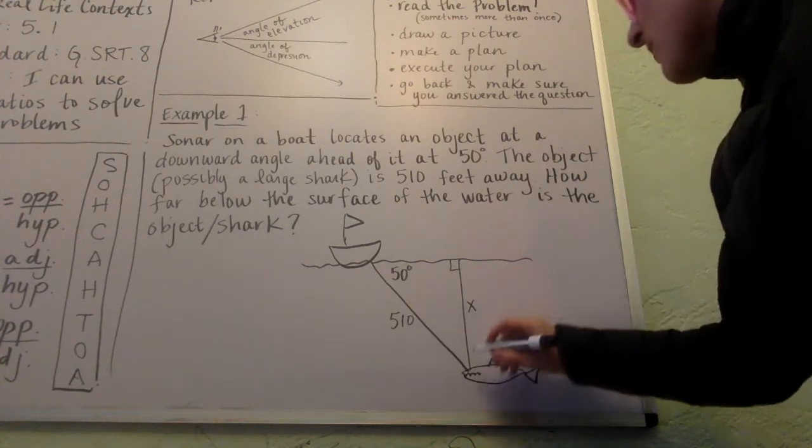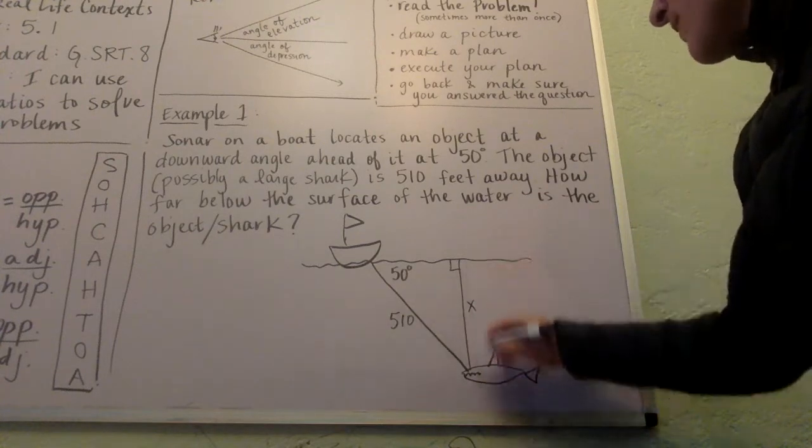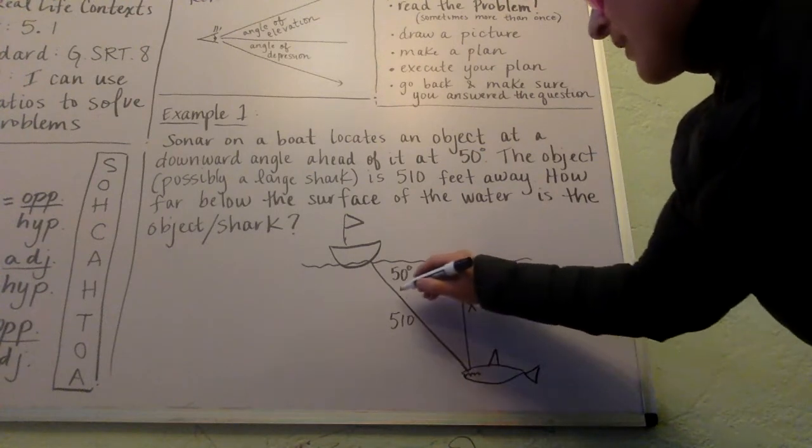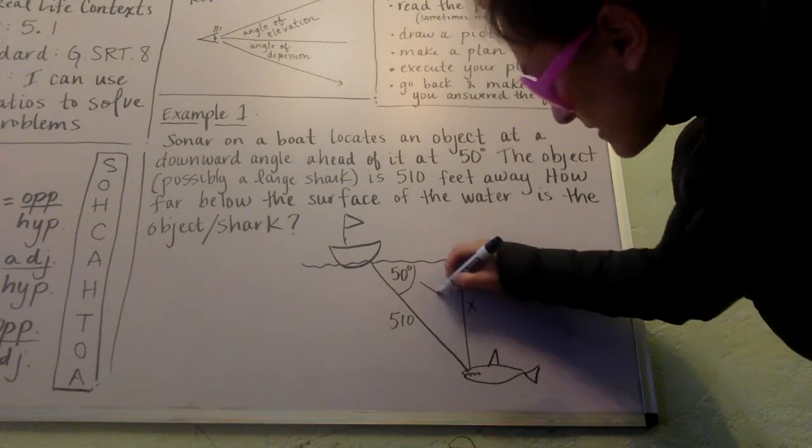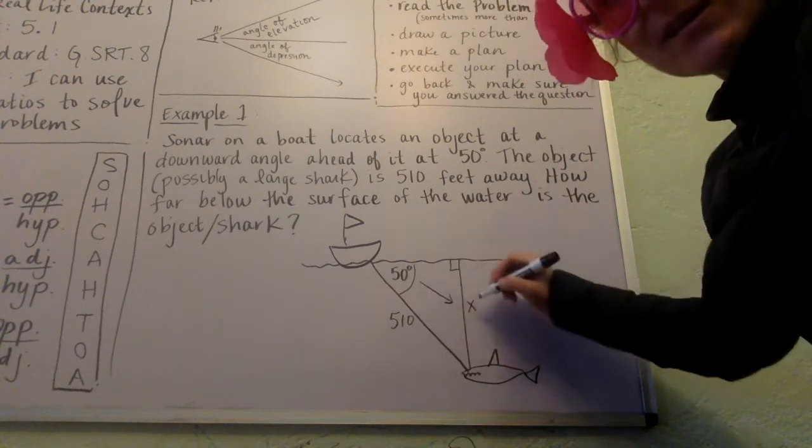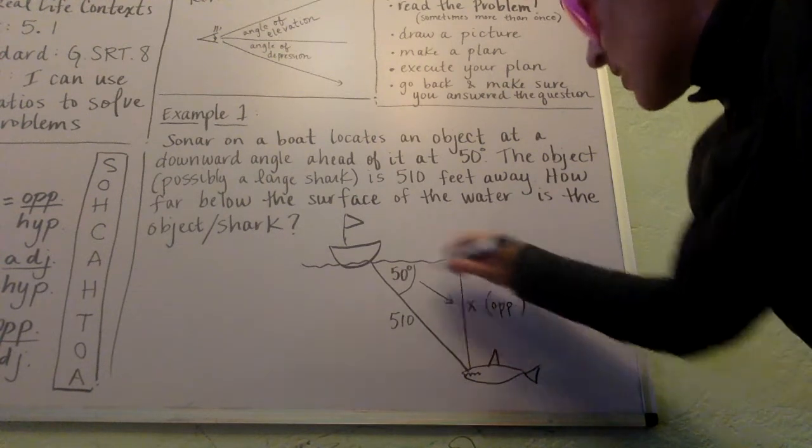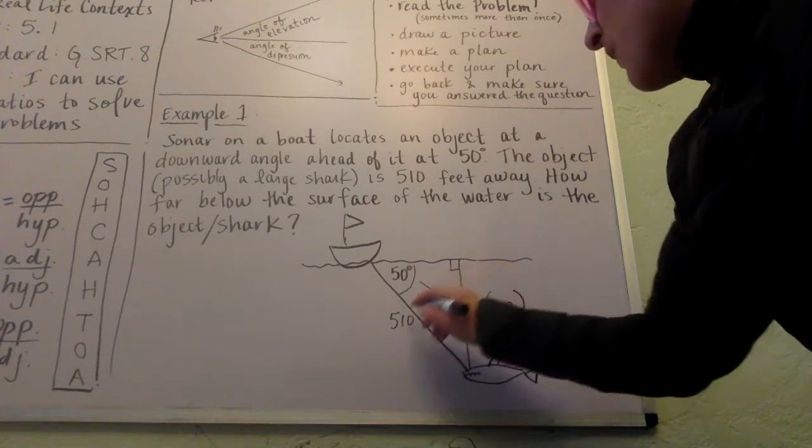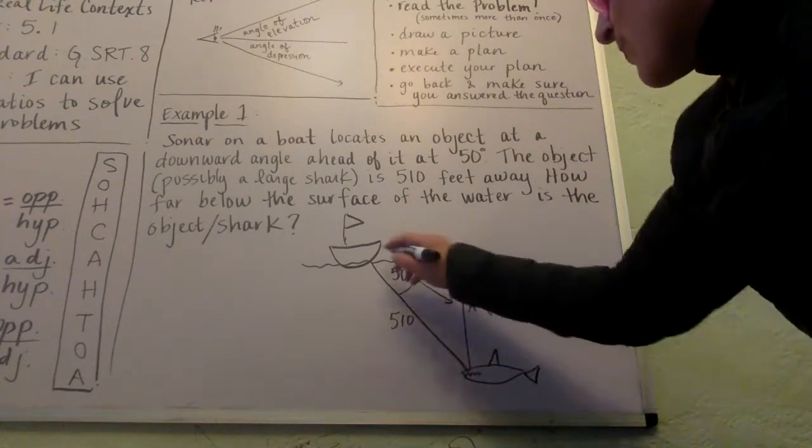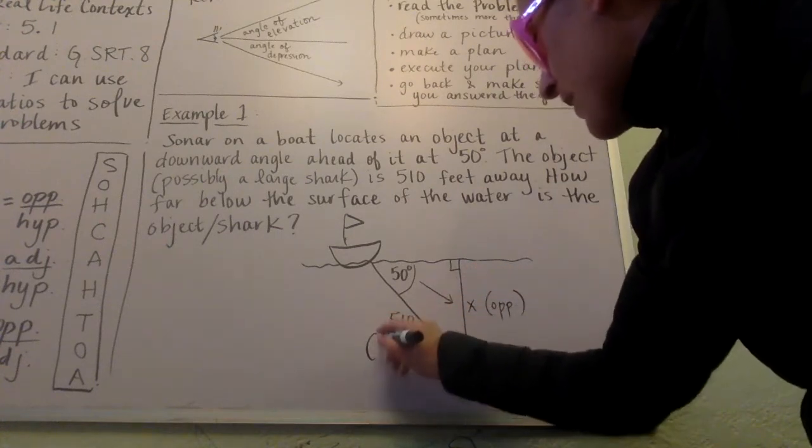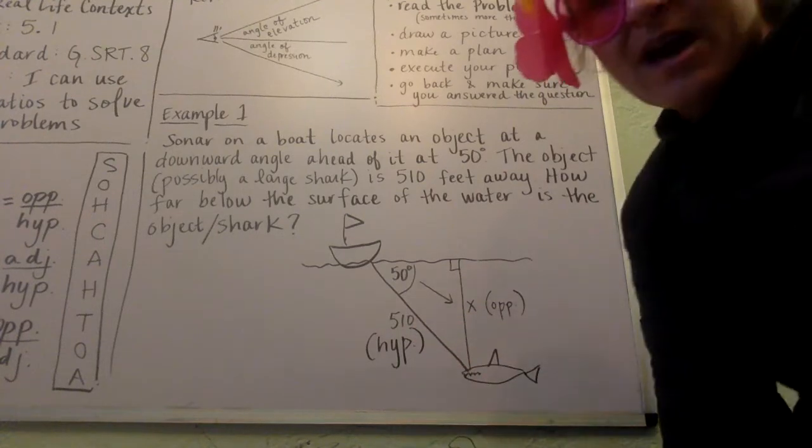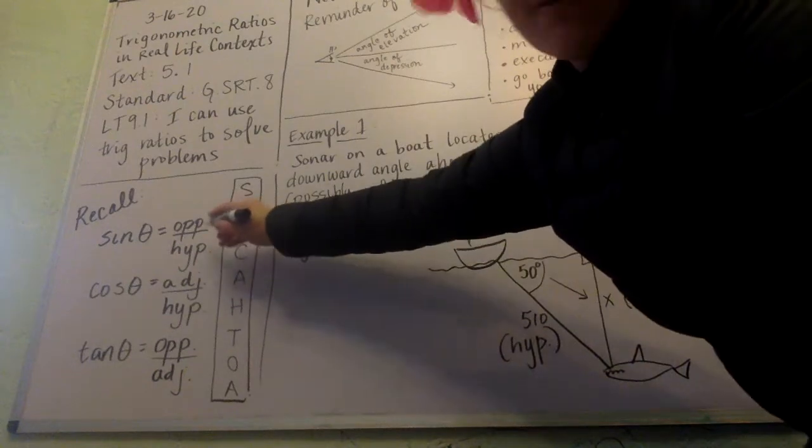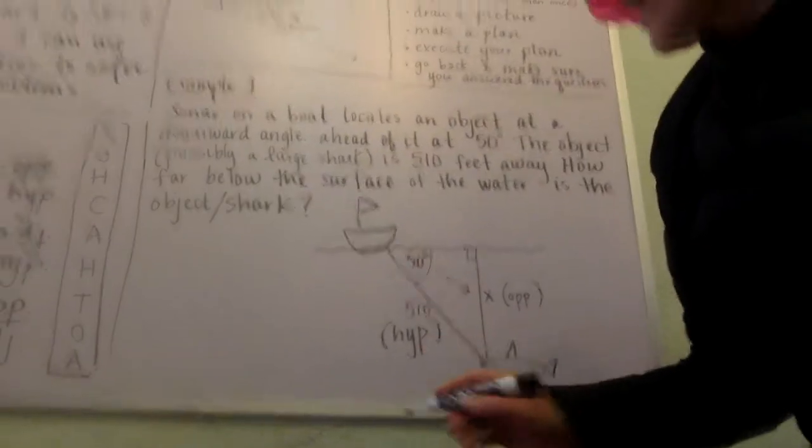I'm going to call this x - that's what we want to solve for, how far from the surface the shark is. Now think about the angle that we know. What side is this in relation to that angle? Hopefully you'll agree that's the side that's opposite from the angle we know. And the 510 has got to be the hypotenuse of our triangle, because it's opposite the right angle. So which of our trig ratios uses hypotenuse and opposite? We're all remembering that's the sine.